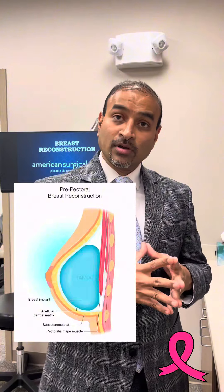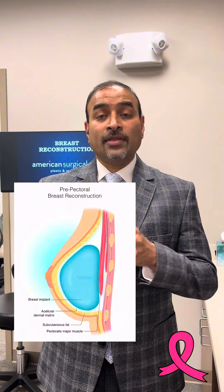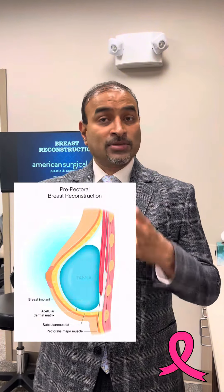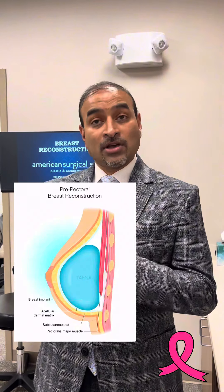We do what's called a pre-pectoral reconstruction, or on-top-of-the-muscle reconstruction, where the implants or expanders are placed under the skin. The advantages are that patients have much less pain, most patients go home the same day, and the time frame between the first and second stage is shorter with this type of reconstruction.